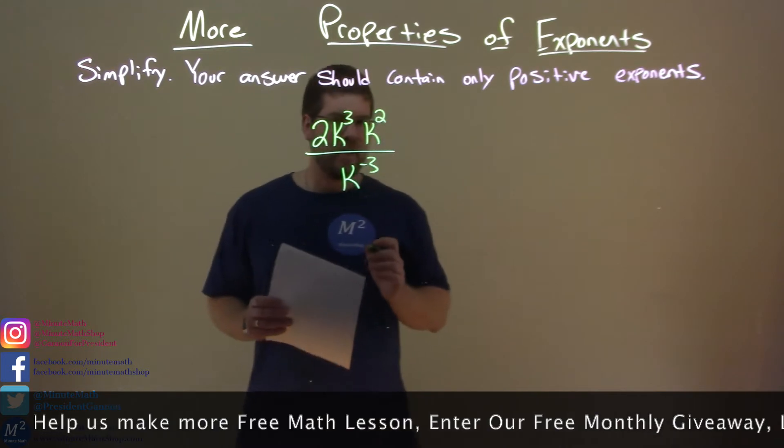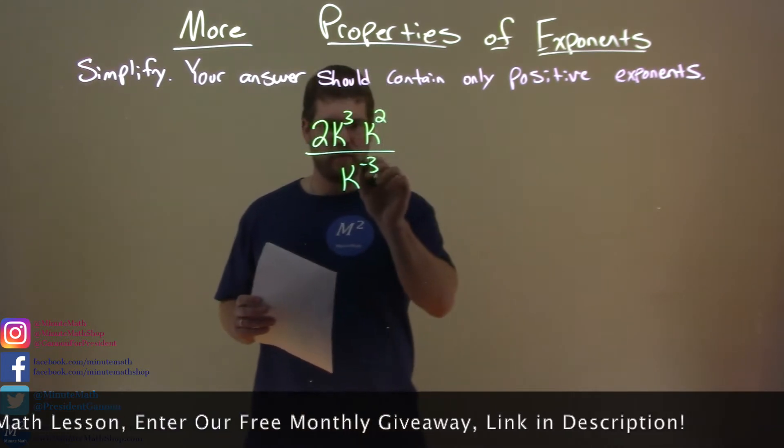One thing we know about negative exponents is that if it's negative in the denominator, it's a positive in the numerator.